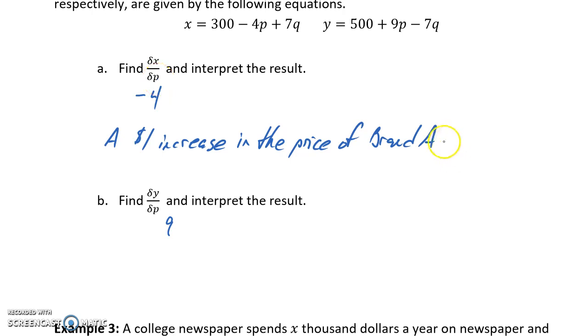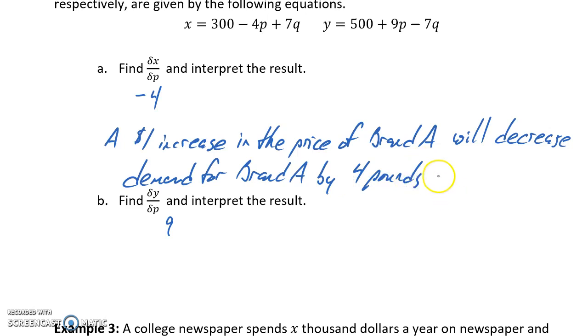P is the price of brand A. This tells us that a $1 increase in the price of brand A will decrease demand for brand A by about 4 pounds at any price level.